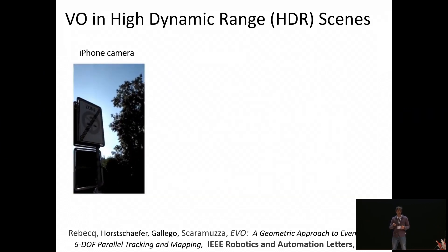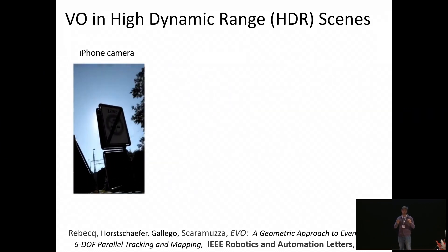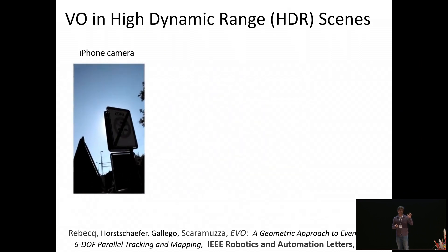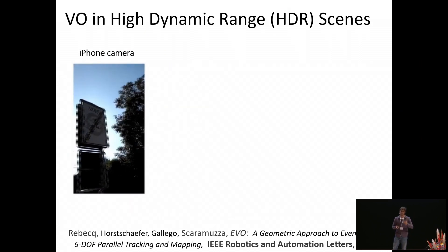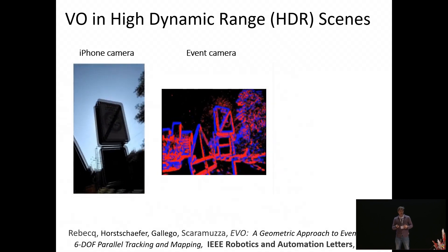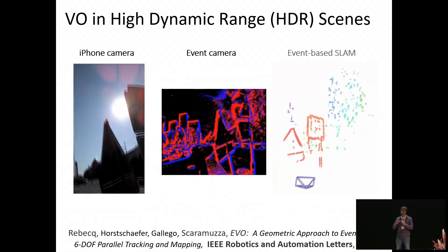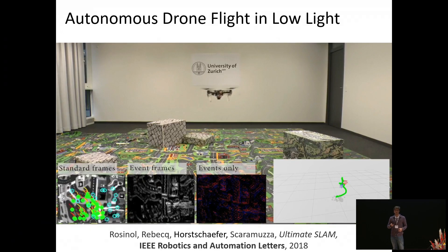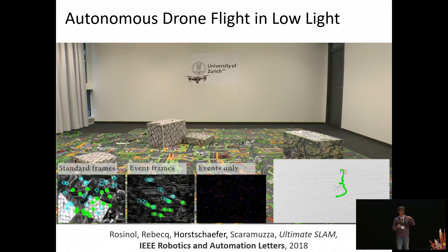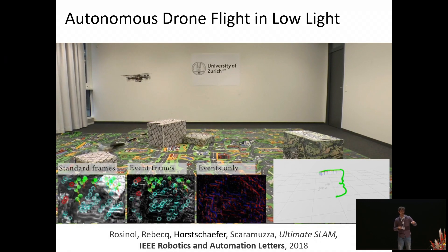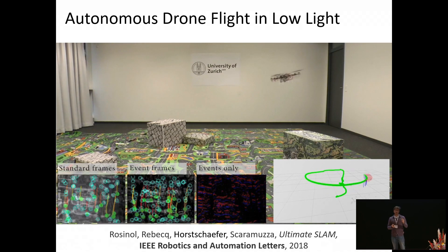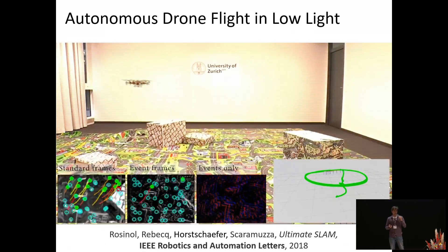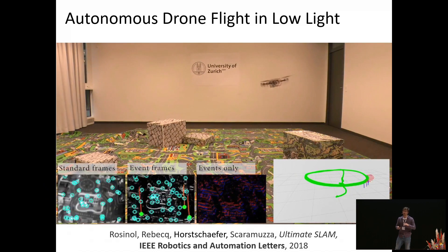Event cameras have also found application in high dynamic range scenes, enabling visual odometry. Here you see an iPhone camera pointing against the sun, where the foreground is overexposed. Event cameras, on the other hand, still capture useful information which can be used for robust event-based SLAM. Finally, event cameras have been used aboard drones to do closed-loop control even when the light is turned off and on, because their high dynamic range provides useful state estimates in very low light conditions.